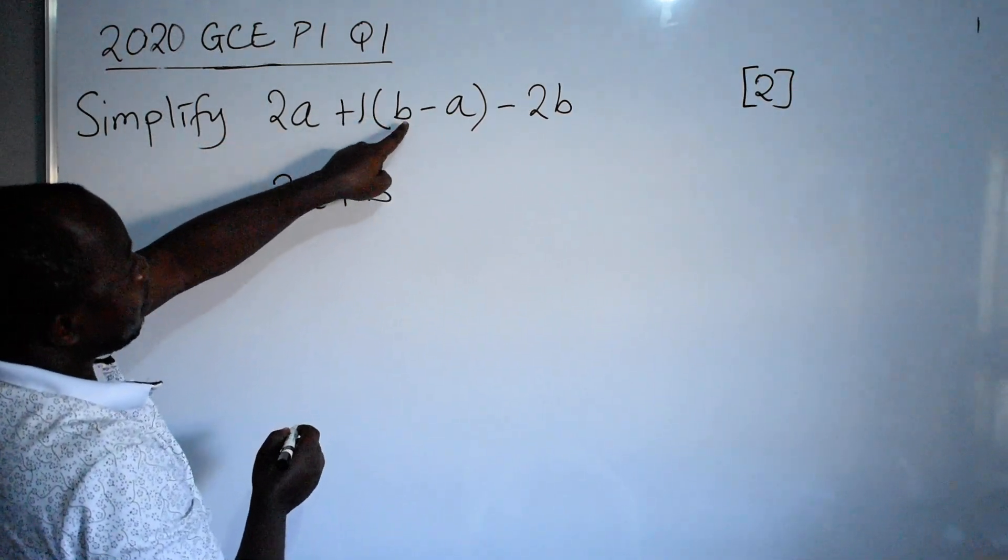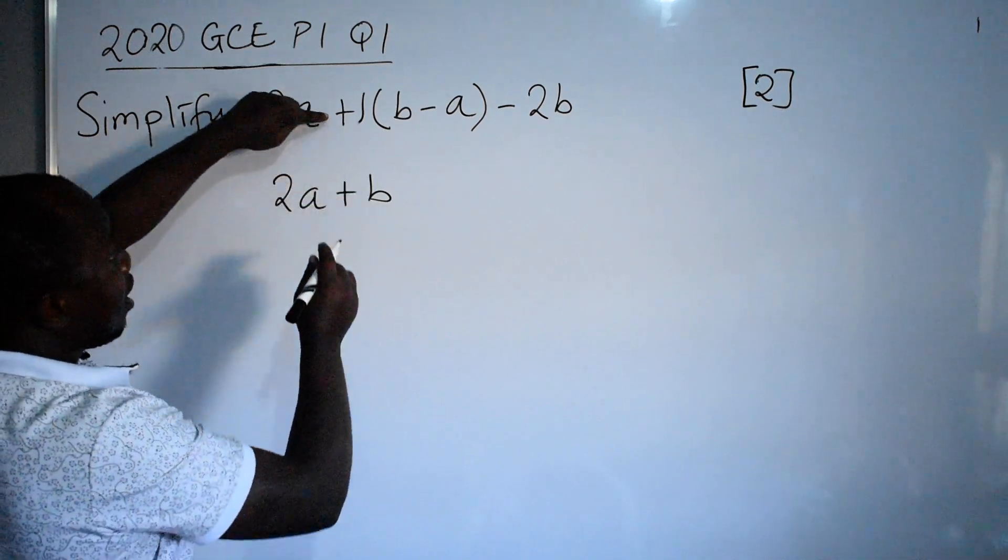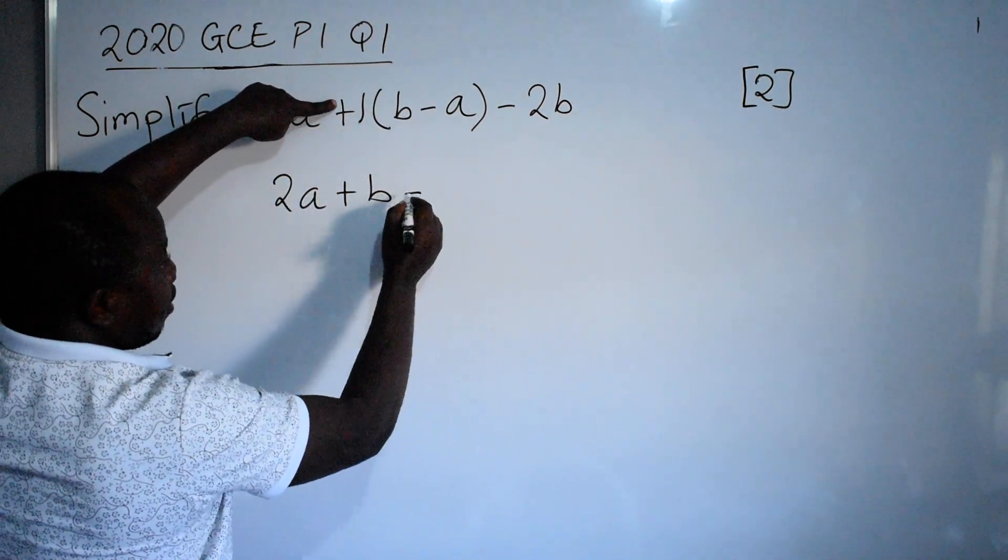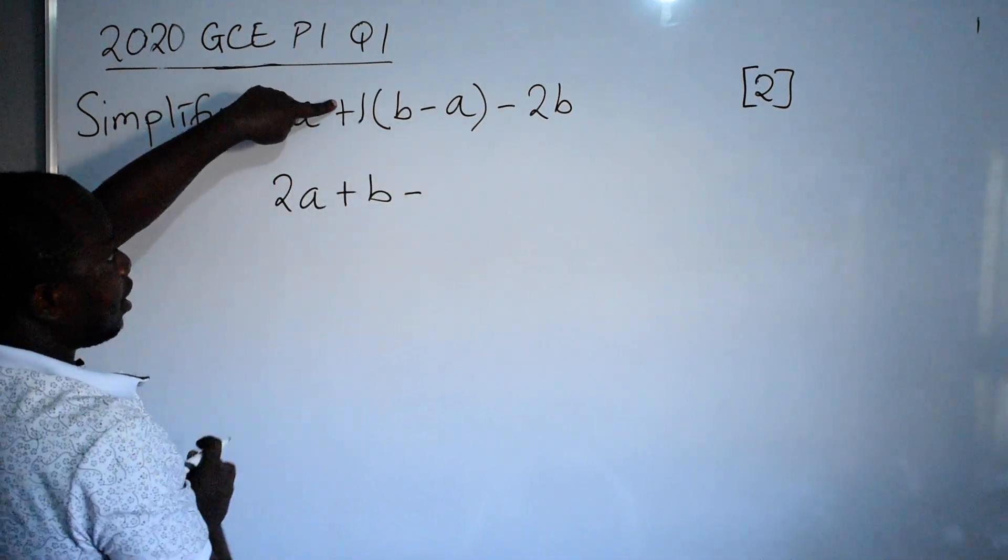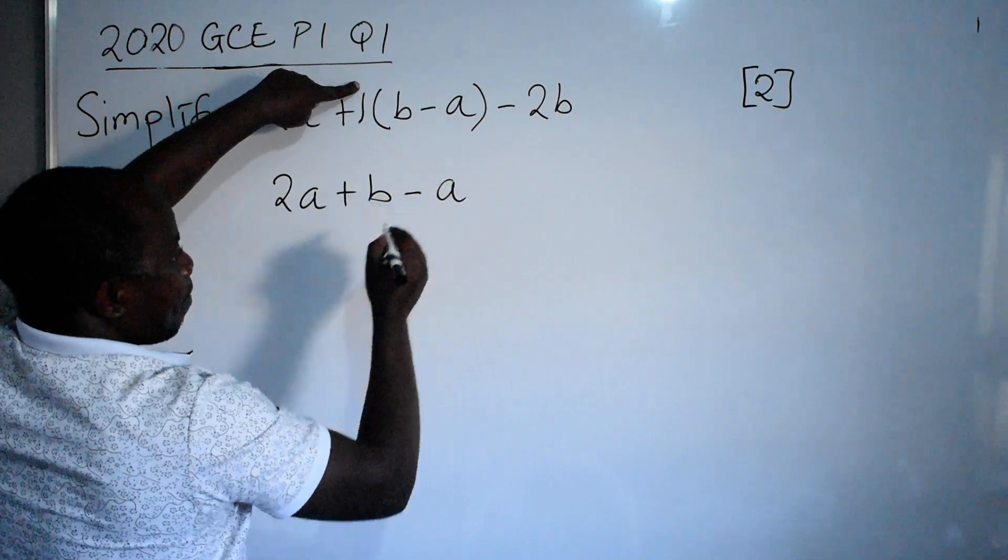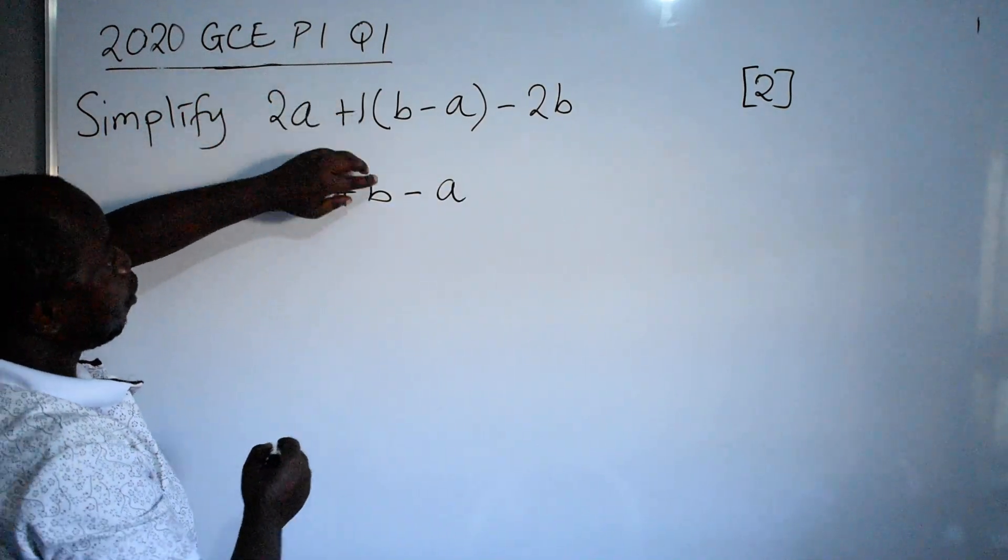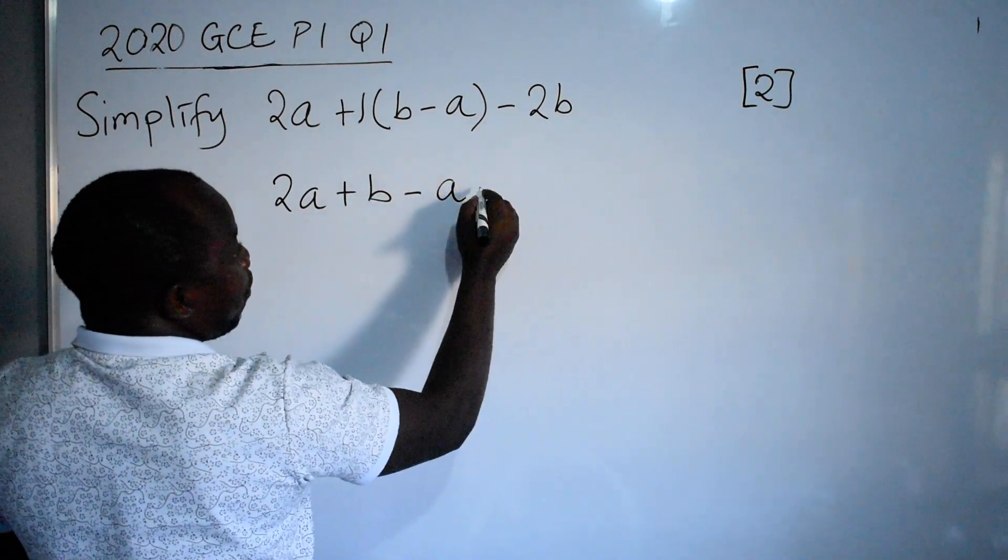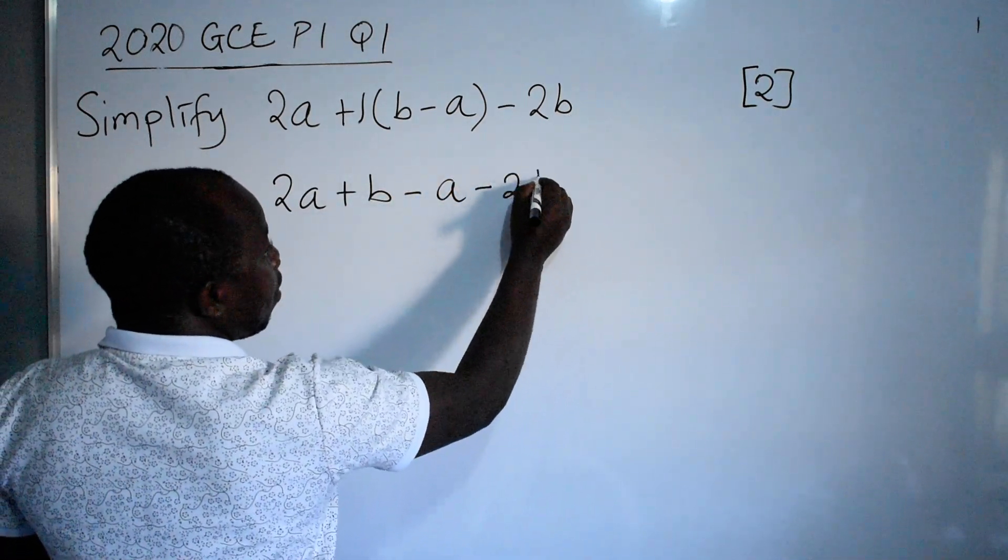1 times b, that is the same as b. Then positive times negative here will give us negative. The signs are different. So negative. 1 times a, this will be a. We are together. So we have multiplied. Brackets have gone. Outside, we have minus 2b.